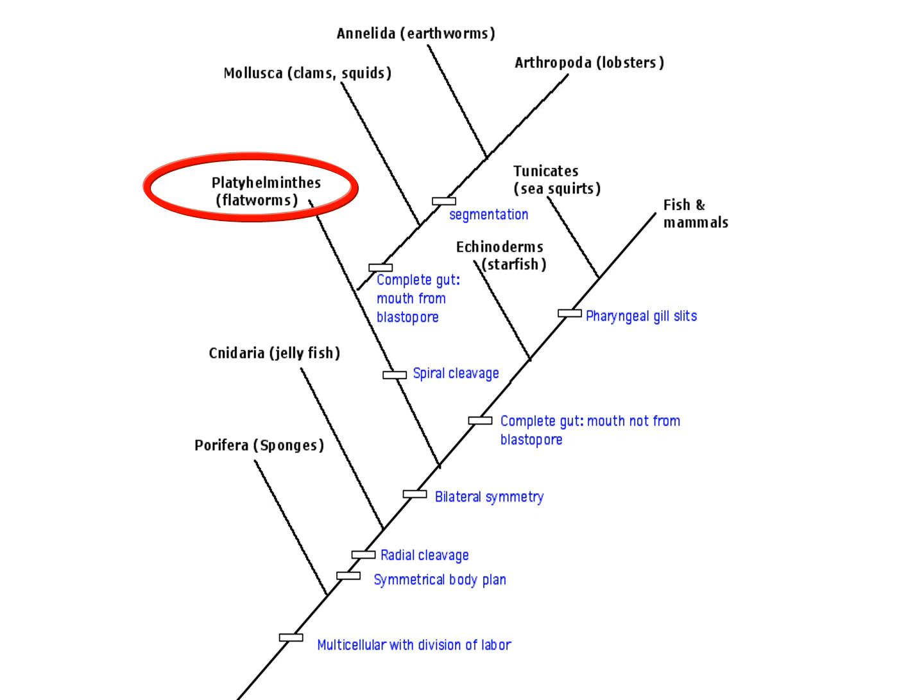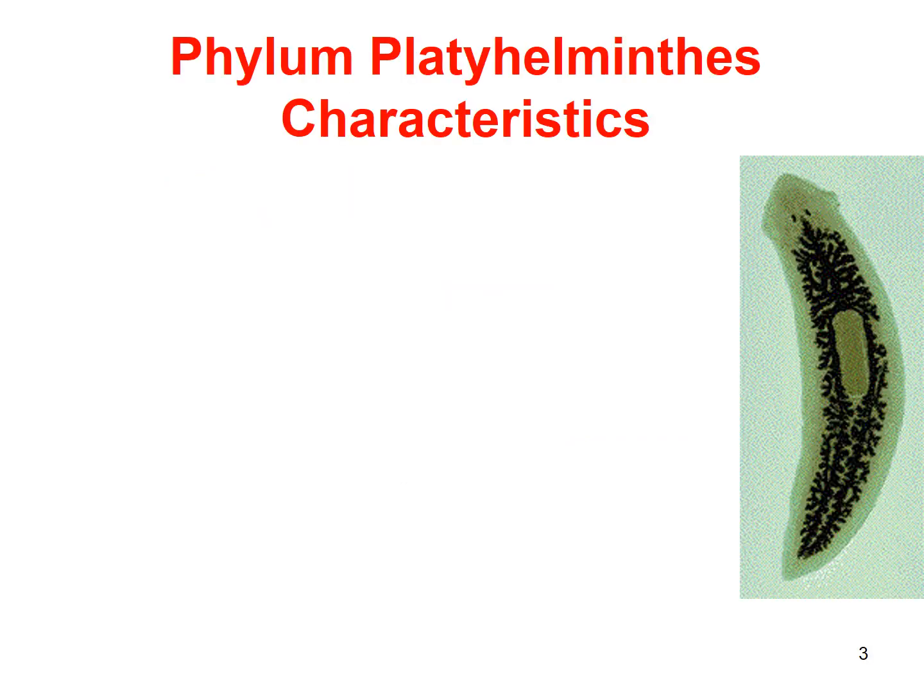If we look at our evolutionary tree or cladogram, these guys are a little more advanced than Porifera and Cnidaria. They now have bilateral symmetry and something called spiral cleavage, which has to do with the way their zygotes divide. But they don't have a complete gut yet — they can actually just absorb nutrients right through their epidermis.